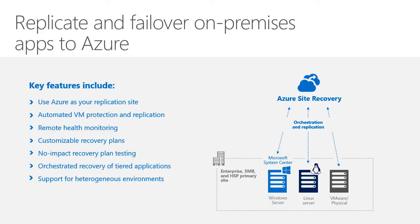You can also use Azure Site Recovery to replicate your on-site infrastructure to Azure, essentially using Azure as your replication site. Your source VMs can be on Hyper-V, Windows Server, Linux Server, physical, or VMware. You're essentially using Azure as your secondary site or backup for all of the VMs you're currently running on-premises.